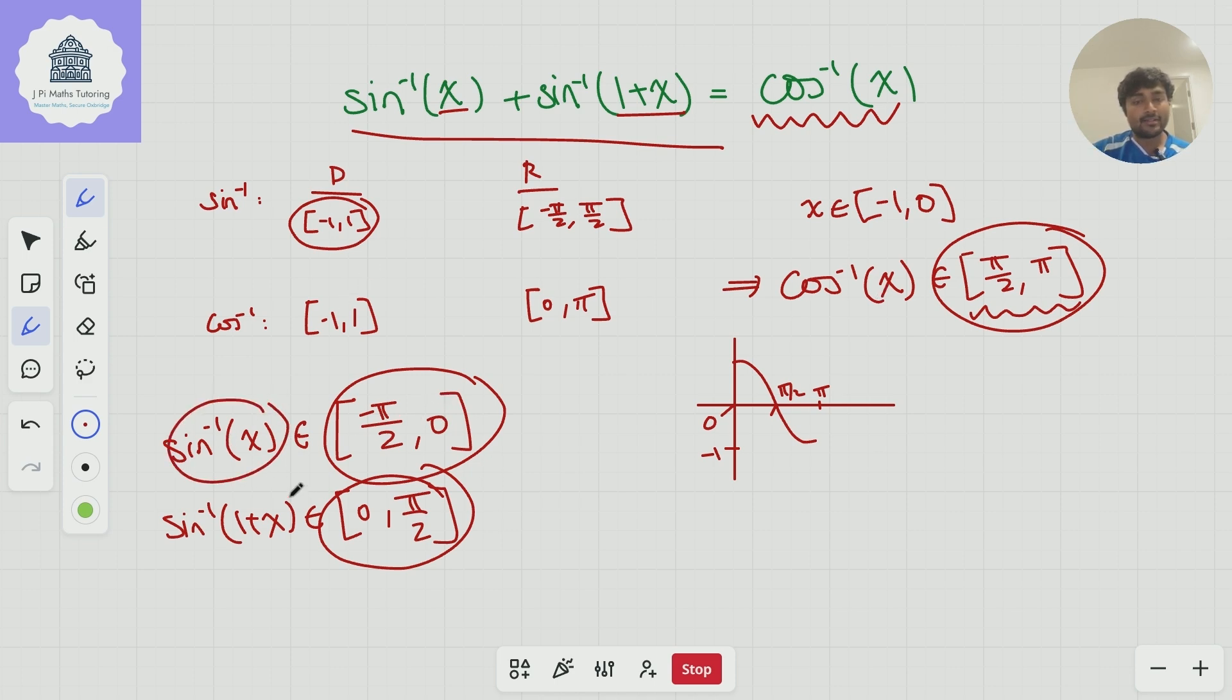So notice that if I add inverse sine x and inverse sine 1 plus x, the maximum is 0 plus pi over 2. And that just so happens to be pi over 2, which is the minimum of the right-hand side. So the only way that this is possible is if inverse cos x equals pi over 2, and that would be if x equals 0.